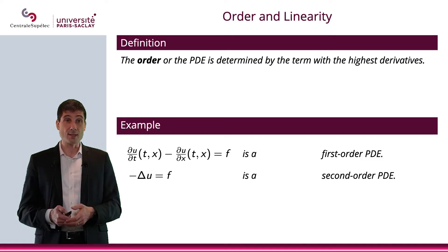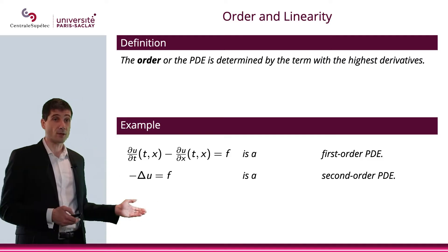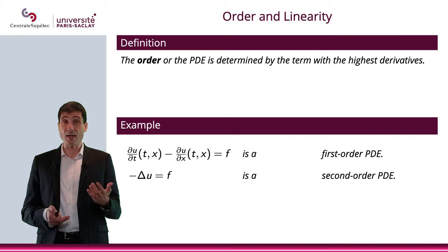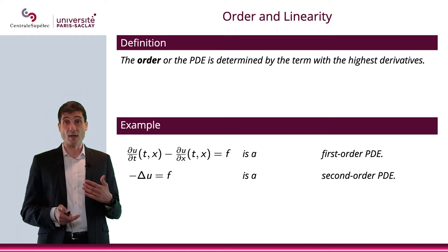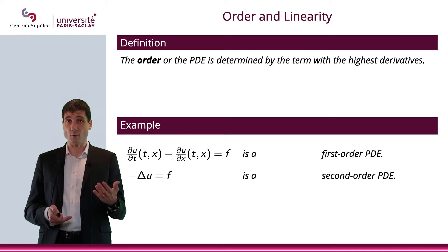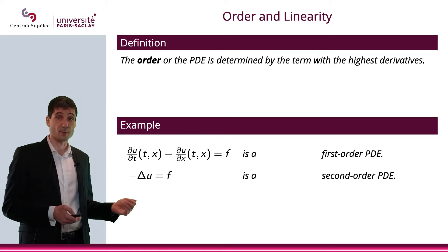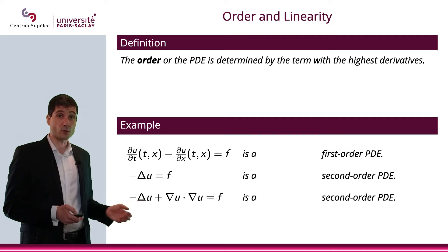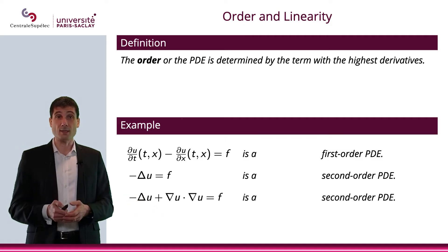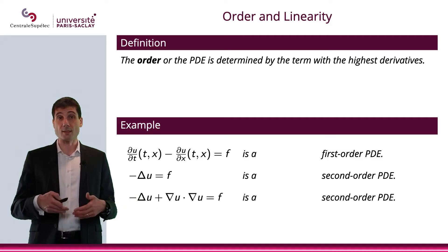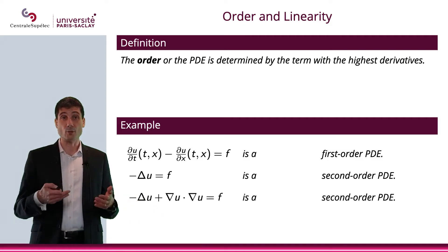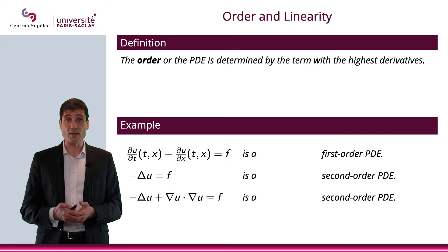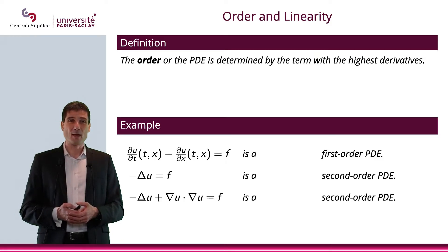If you look at this equation, that's minus Laplace u equals f — well, you know in the Laplace operator you have second-order derivatives, so that would be a second-order PDE. That one would also be a second-order PDE: minus Laplace operator plus (∇u · ∇u) equals f — again, second-order PDE.